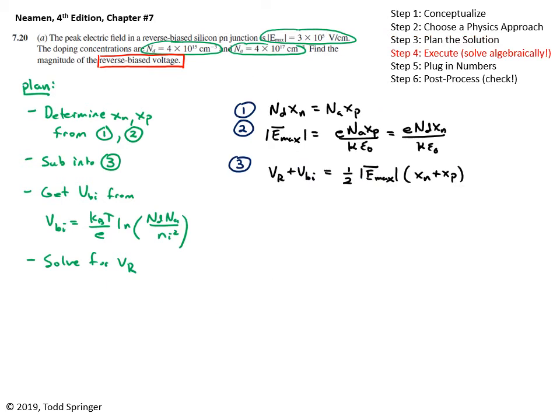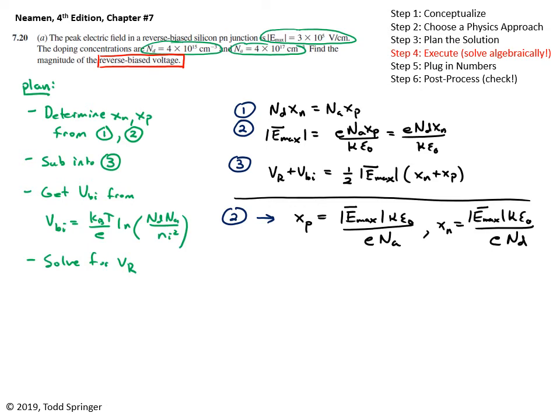Okay, so let's try to execute the plan. I try to give myself a little bit more space here. So determine xn and xp from 1 and 2. So let's do from number 2, I get, I can solve this for xp, is equal to emax times kappa epsilon naught over E times NA. And then similarly, I can get xn by using either 1 or solving the second relation from 2. And that's going to look as follows. Just like that. So I have all those things, right? I know xn and xp because I know everything on the right-hand side of that equation.